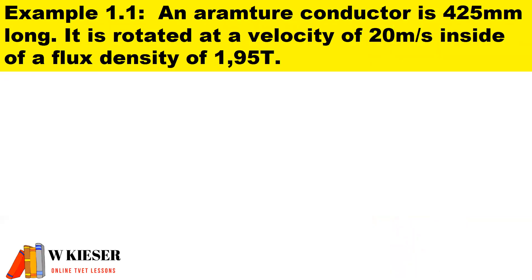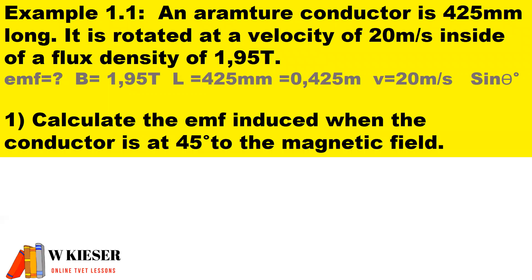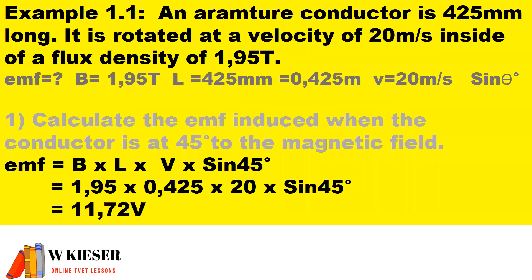In our first example, an armature conductor is 425 millimeters long, rotated at a velocity of 20 meters per second, inside a flux density of 1.95 Tesla. Part one: calculate the EMF induced when the conductor is at 45 degrees to the magnetic field. Substituting 45 into sine theta, multiplied by 1.95 Tesla, the length of 0.425 meters, and velocity of 20 meters per second, gives an EMF of 11.72 volts.